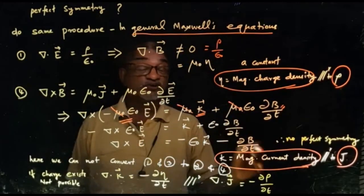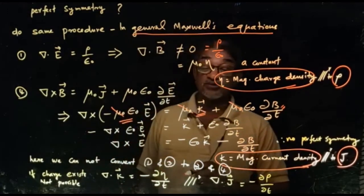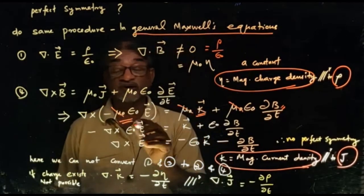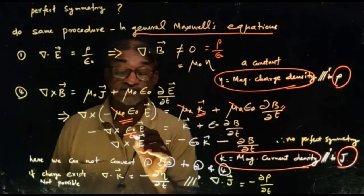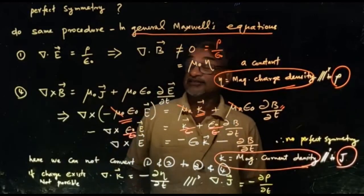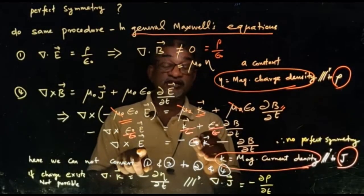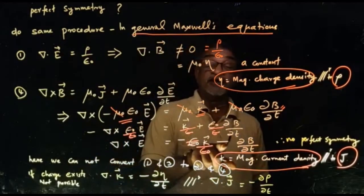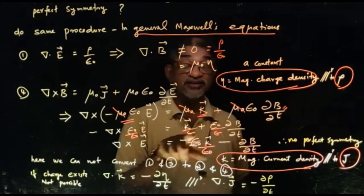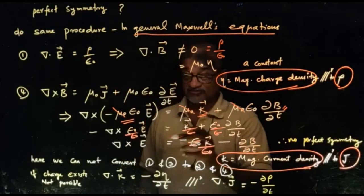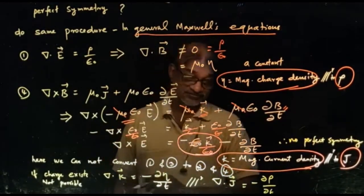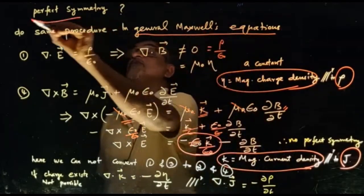Dividing by ε₀ and rearranging, we get ∇×E = −K/ε₀ − ∂B/∂t. Comparing with equation 3, ∇×E = −∂B/∂t, an additional term −K/ε₀ is appearing. So there is no perfect symmetry here. Equation 4 does not transform cleanly into equation 3 when an additional term is present.